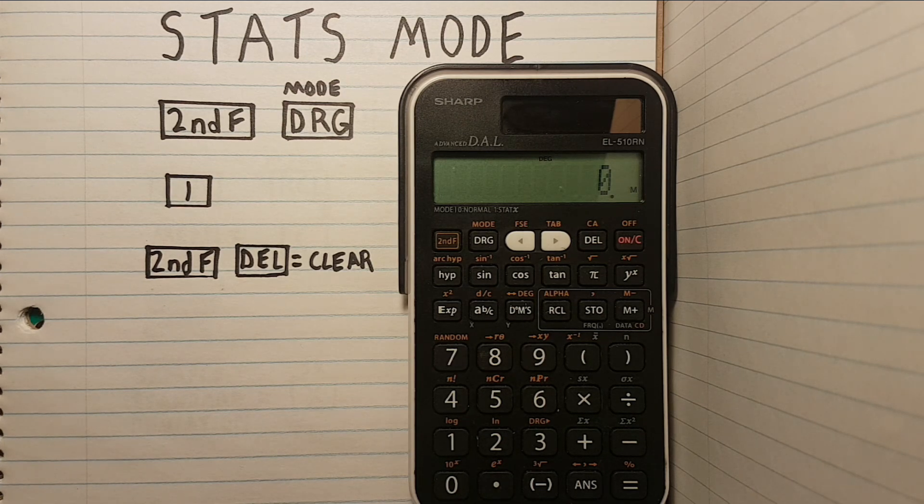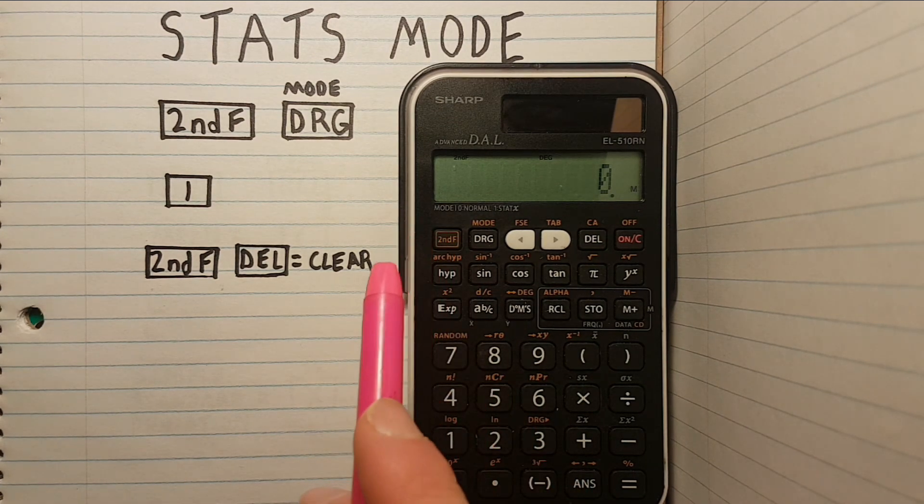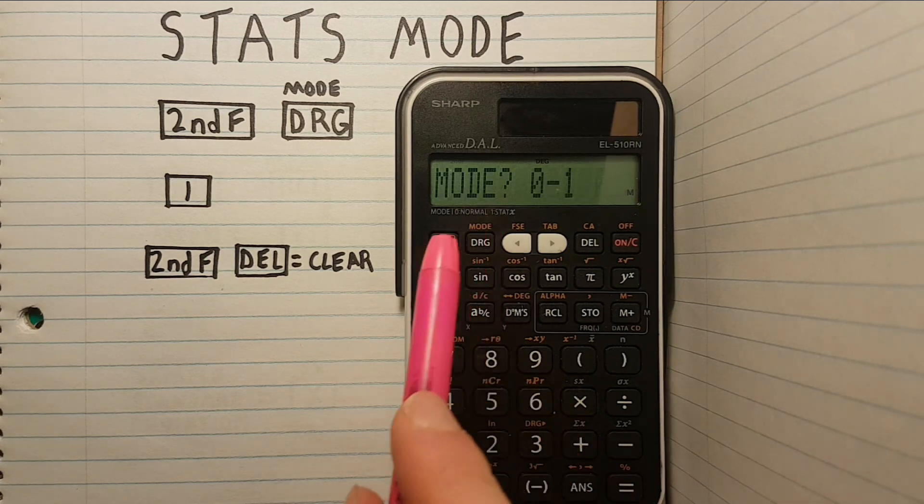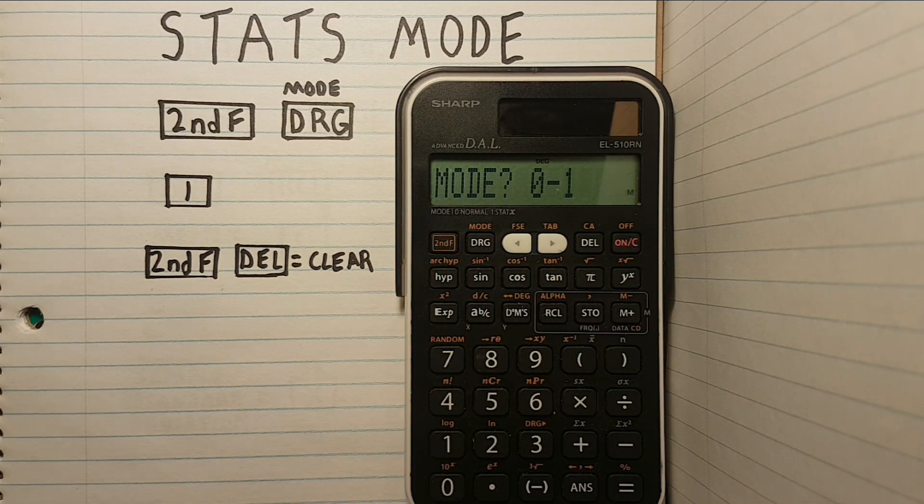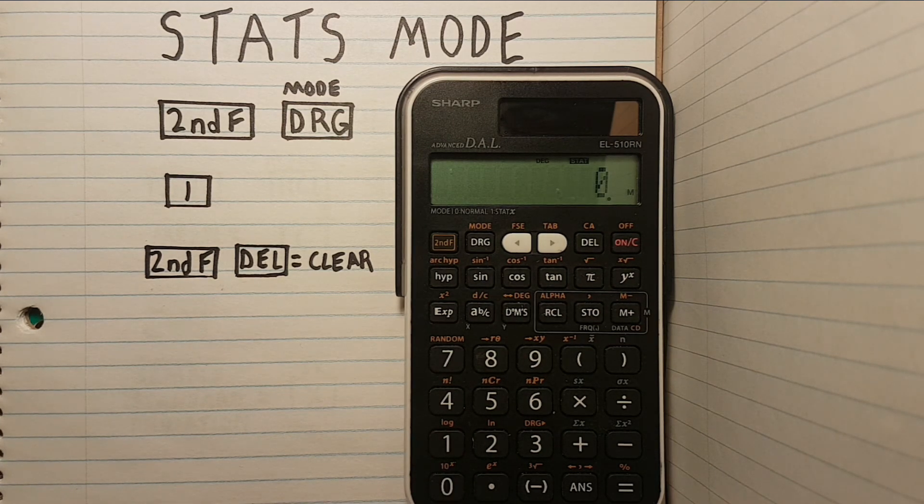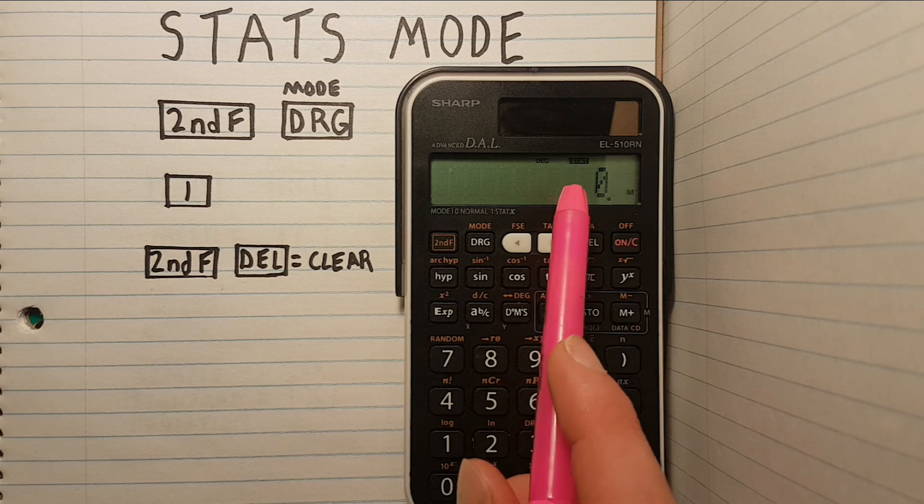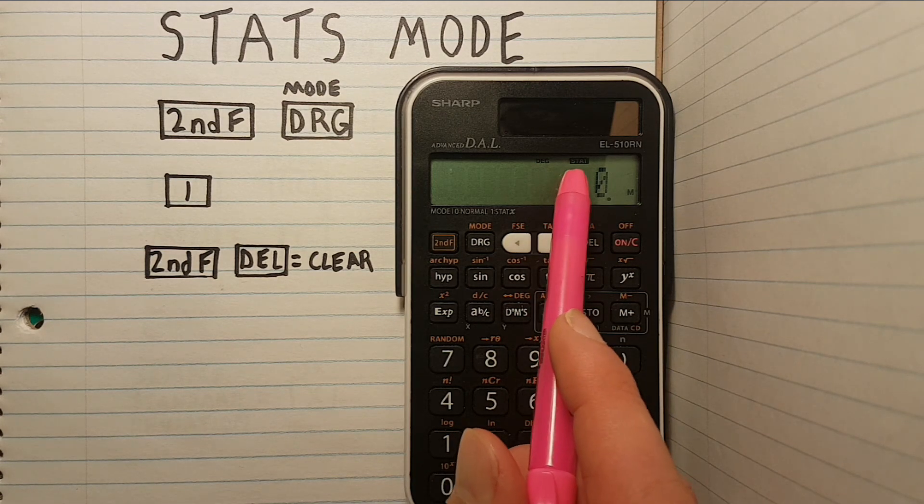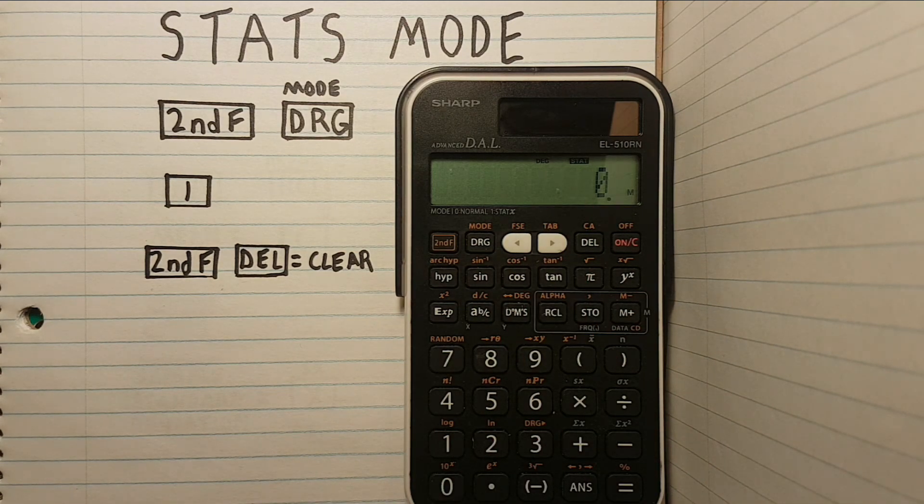To start we need to enter the stats mode. To do this we will hit the second function, mode key. This brings up the mode menu. We can choose either mode 0 or mode 1. Stats mode is mode 1, so we press 1. You can now see at the top of the screen the word stat, indicating we have entered stats mode.